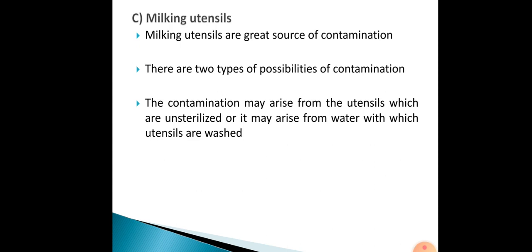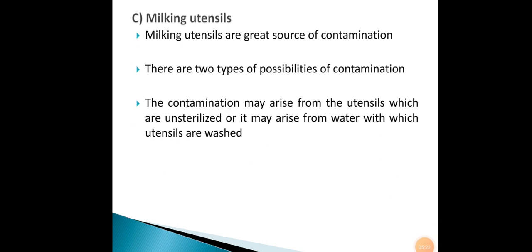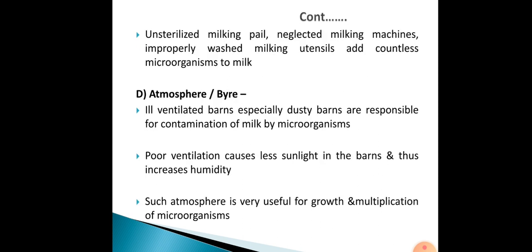Milking utensils are a great source of contamination. There are two types of contamination possibilities: it may arise from unsterilized utensils, or from the water with which utensils are washed. Unsterilized milking pails, neglected milking machines, and improperly washed milking utensils add countless microorganisms to the milk.